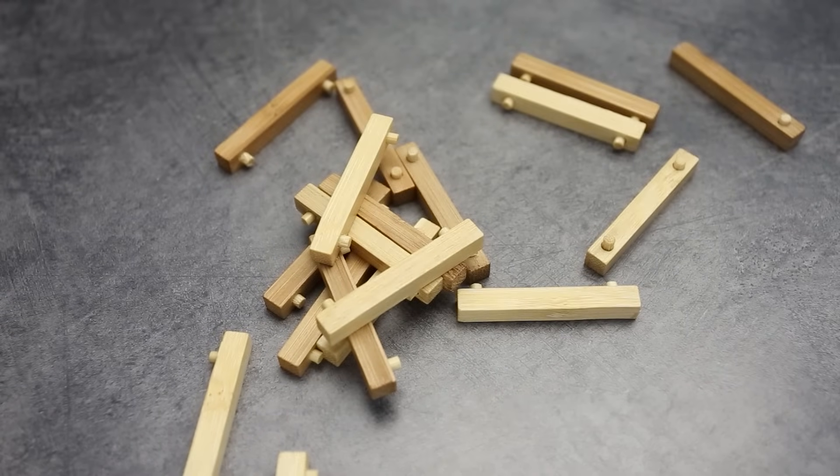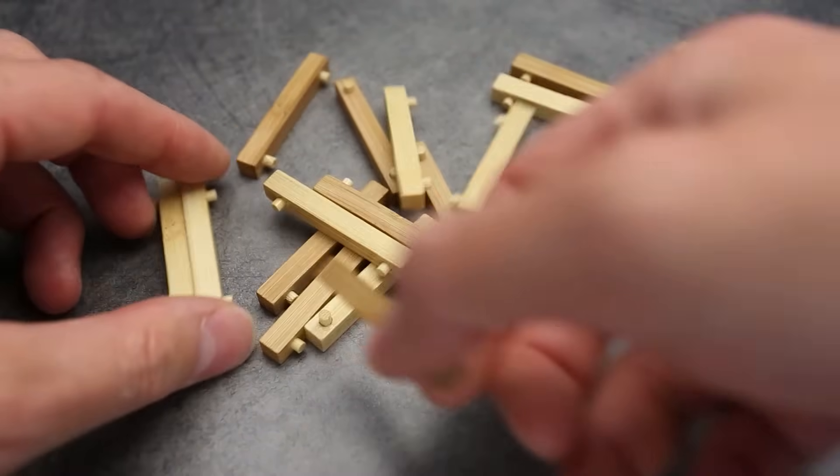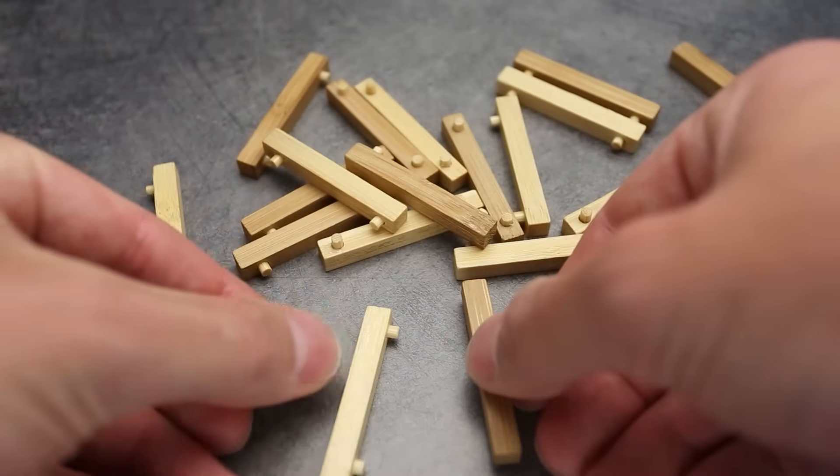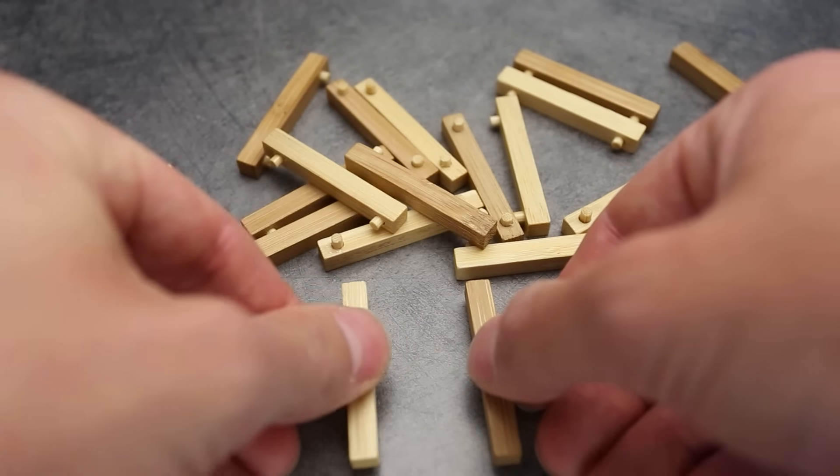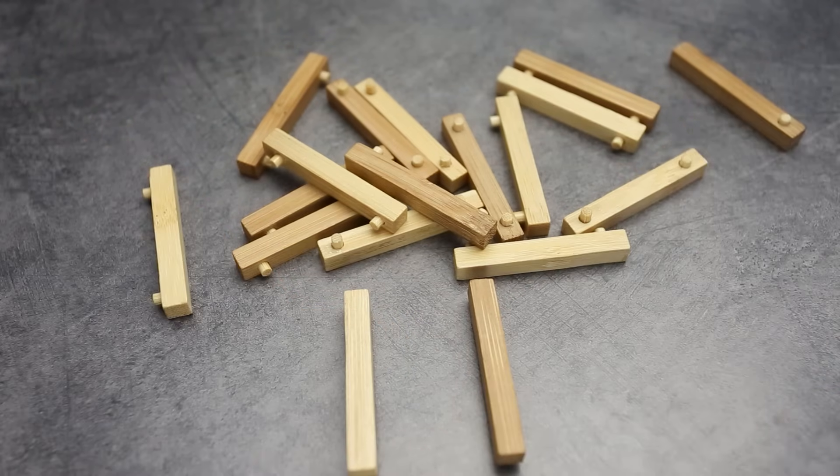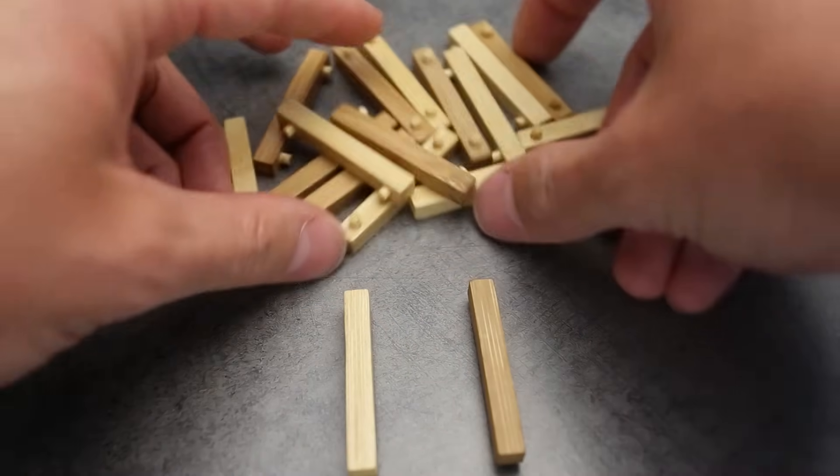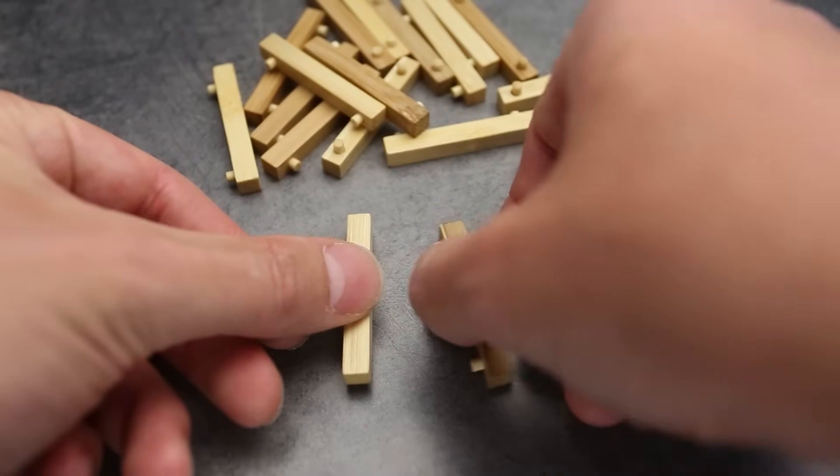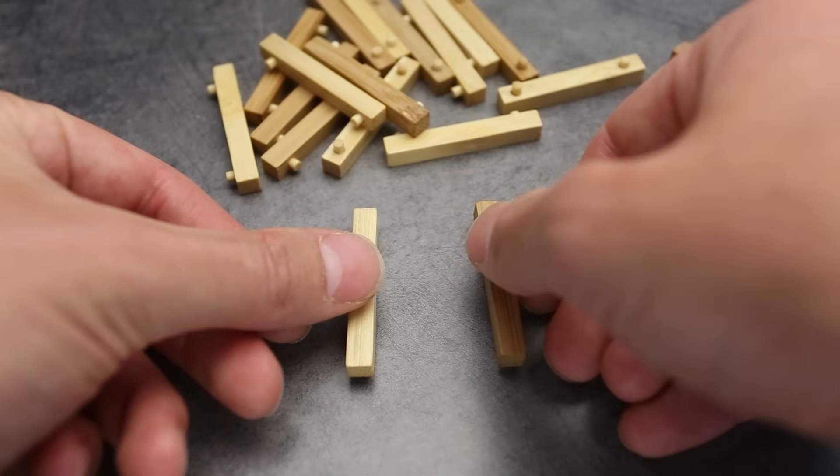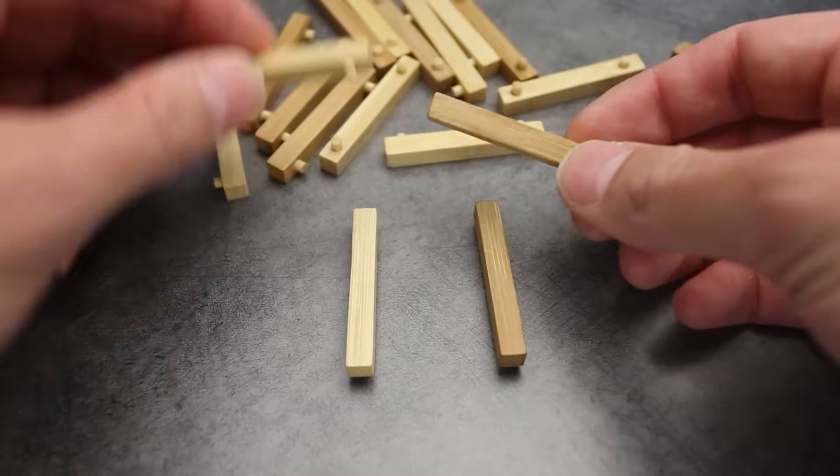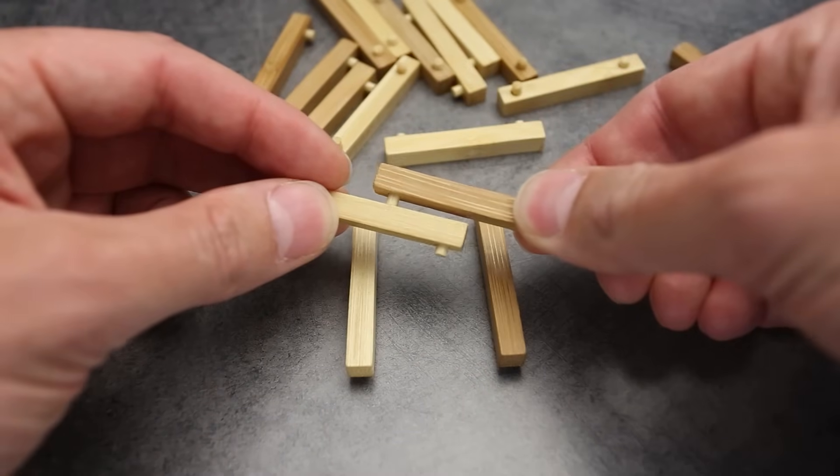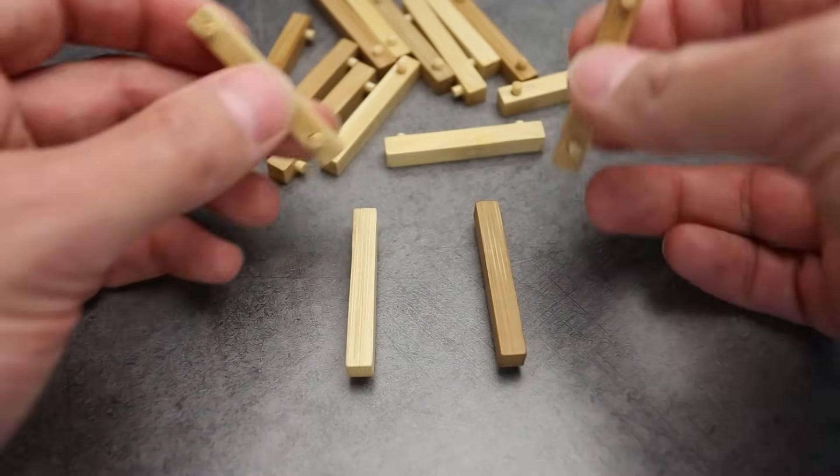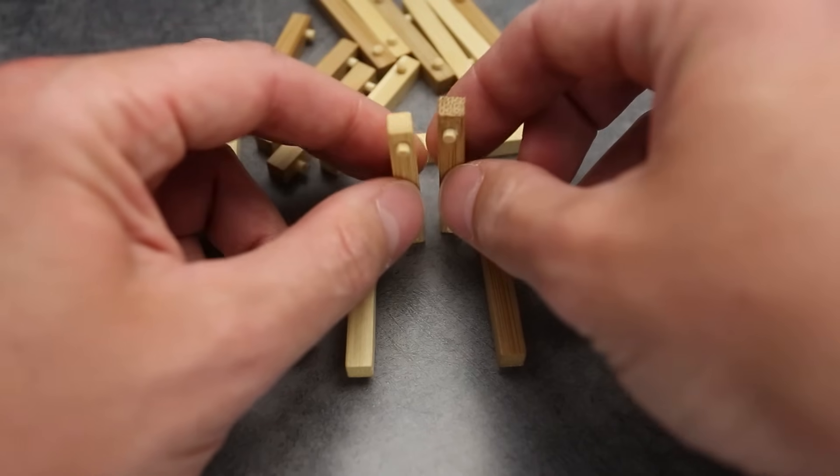To assemble it again, what I like to do is take two pieces and put them lips down like this. So my puzzle has two different colors, light and dark wood, and I'm going to assemble it the same way it was in the box.